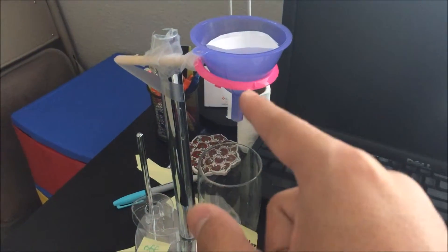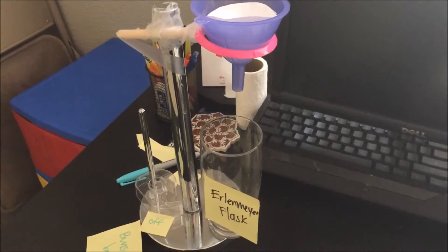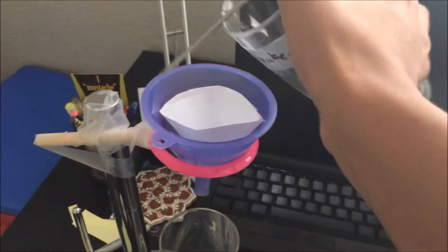For the ring stand, make sure that the end of the funnel is close enough to the Erlenmeyer flask that the solution will go in, but far enough that it is not inside the flask.